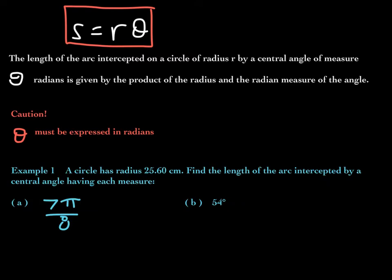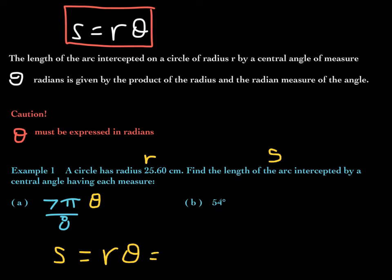Here's our first example. A circle has radius 25.60 centimeters. Find the length of the arc intercepted by a central angle having each measure. There are two parts: the first angle has measure 7π/8 radians, and the second angle has measure 54 degrees. For the first one, the radius R is given as 25.60 cm, and we need to find the arc length S. Theta is 7π/8, and the formula we're using is S equals R times theta.